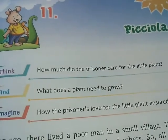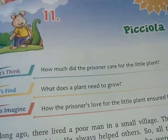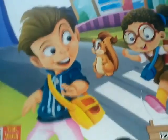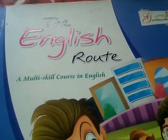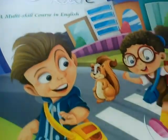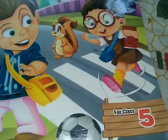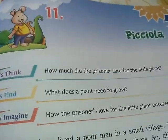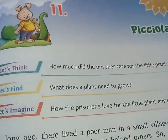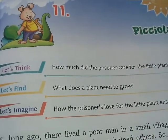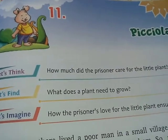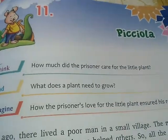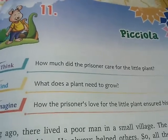Good morning, students. Once again, we are here to discuss English chapter number 11. Our course book is the English Root of Multiskill Course in English, class 5. We have to discuss the August month syllabus. We already discussed chapter number 10, which is a poem. In chapter number 11, it is a story called Picciola.